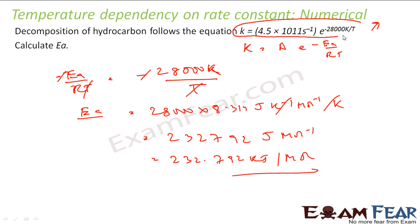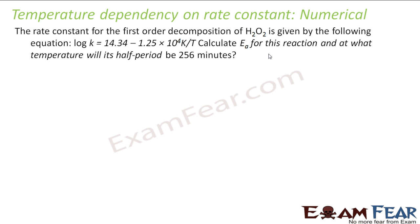Pretty easy — just compare this formula to the Arrhenius equation and find the activation energy. The rate constant for the first order decomposition of H2O2 is given by the following equation. We have to find Ea for this reaction and at what temperature the half-period will be 256 minutes. Two things to find: first, the activation energy Ea; second, the temperature. From T half we can easily find K, since 0.693 divided by K equals T half. So we have the value of K and need to find at what temperature that K value occurs.